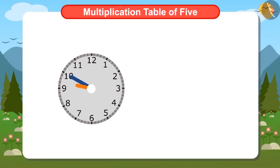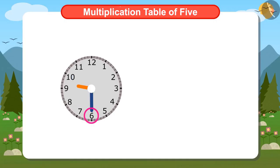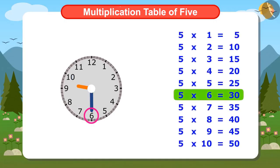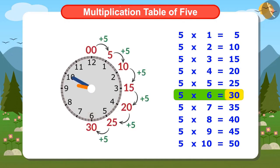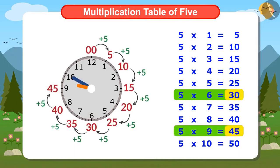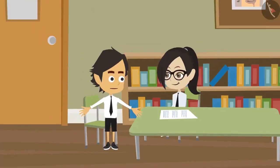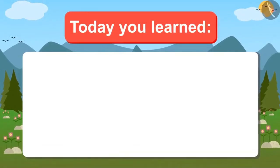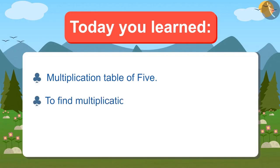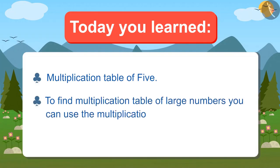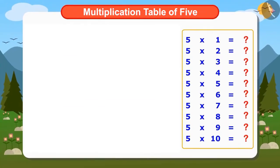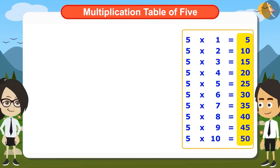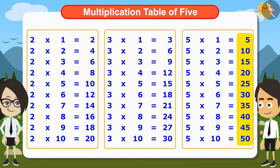Now look at the clock. When the minute hand is at 6, reading the multiplication table of 5 up to 6 tells us it is 30 minutes. And when it's on 9, it will be 45 minutes. Yes, this is the right way to read time. Today we learned the multiplication table of 5 and also learned that to find the multiplication table of large numbers, you can use the multiplication table of small numbers — like using the tables of 3 and 2 to find the table of 5.